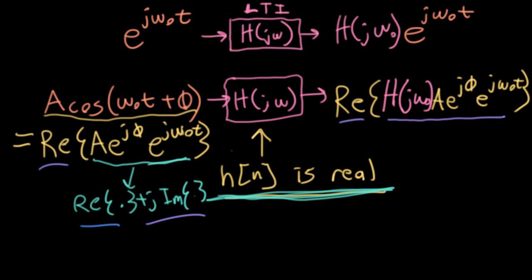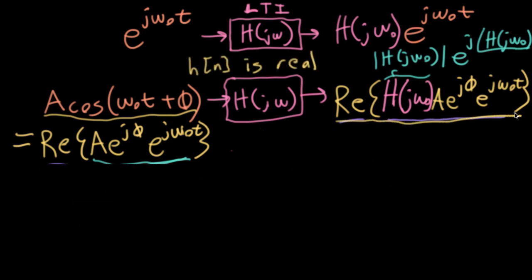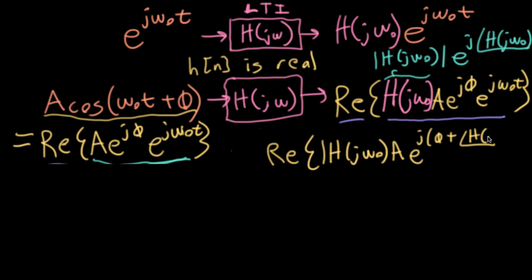So let's figure out what comes out here. Big H of j omega can be written as a magnitude times e to the j phase of big H of j omega. To save space, let me move this up here. So all of the stuff here is equal to real part of... By the rules of complex numbers, we'll multiply the magnitudes together, and then we'll multiply the e to the j phases together, which corresponds to adding. So we can write this as e to the j phi plus big H j omega naught, and then all of this in here is times e to the j omega naught t.